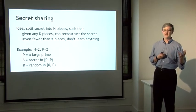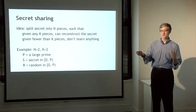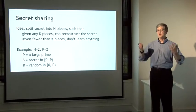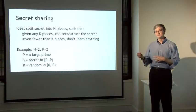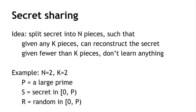For example, we might have n equals 2 and k equals 2. That means we're dividing the secret into two pieces, and you need both pieces to put them together. A specific way of getting n equals 2, k equals 2 secret sharing is as illustrated here. First we're going to generate a number p, which is a large prime number. It doesn't need to be secret or anything, just really big. S is going to be the secret, and the secret has to be between 0 and p minus 1 inclusive. Then we're going to generate a random value r secretly, which is also within the range between 0 and p minus 1.